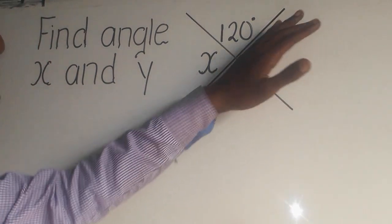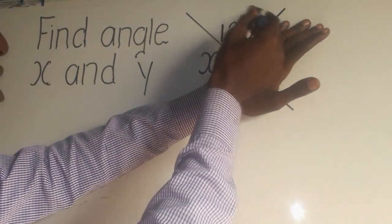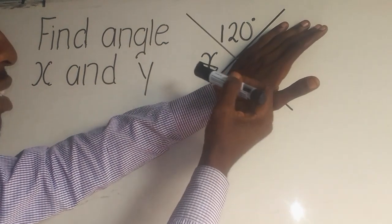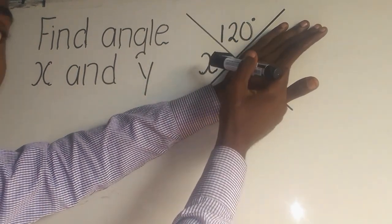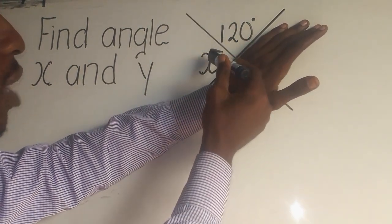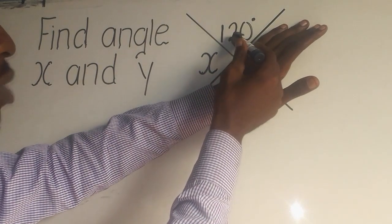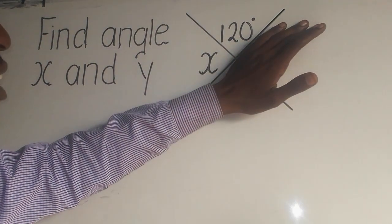Now, as you can see that as I do this, this here is a straight line. It simply means that these two here are supplementary angles. Meaning, when you add the x plus 120, it's supposed to give you 180.